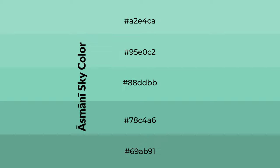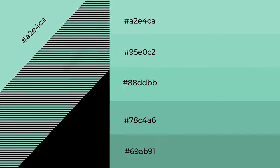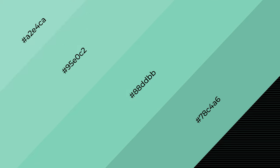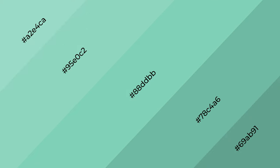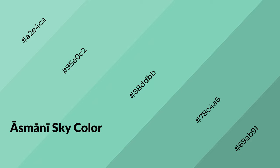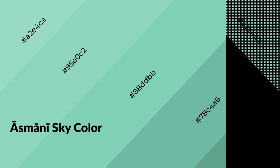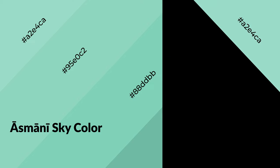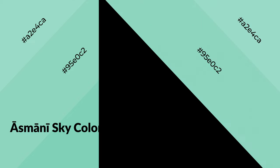To generate shades of a color, we add black to the color. Shades are used in patterns, 3D effects, and layers — they create depth and drama. Asmani sky is a cool color and it emits calming, serene, soothing, refreshing, and spacious emotions.